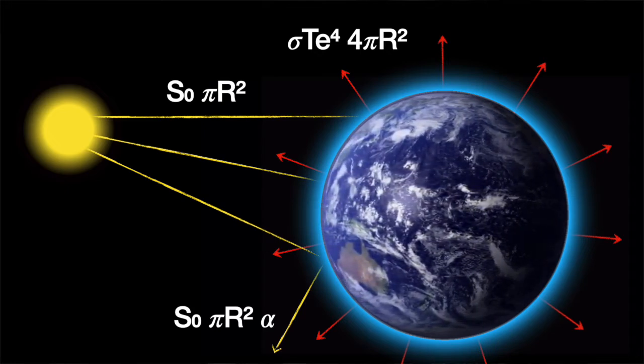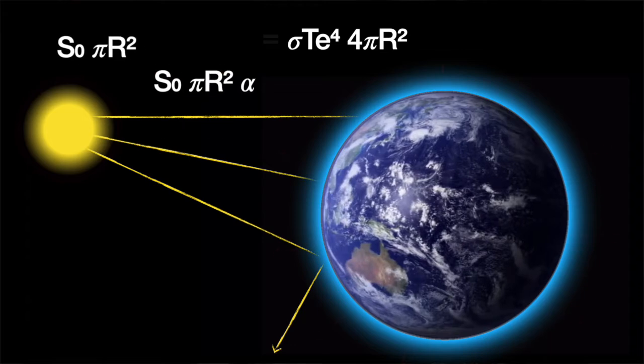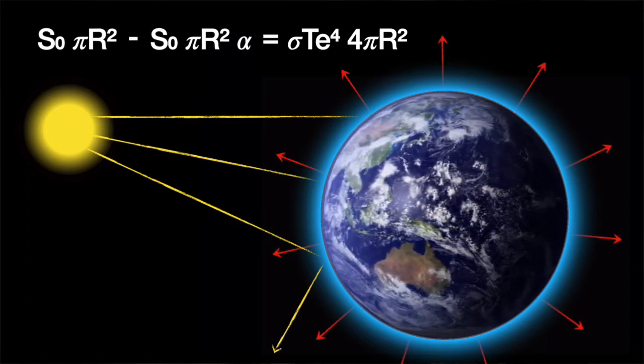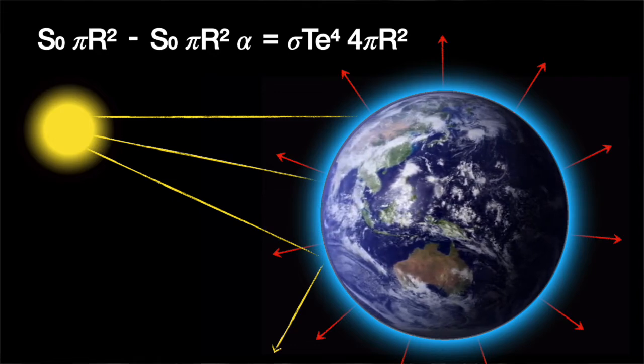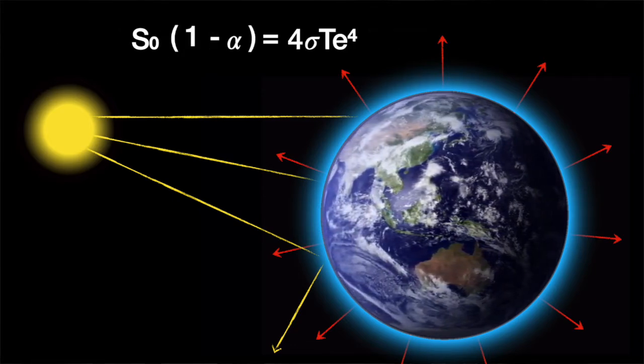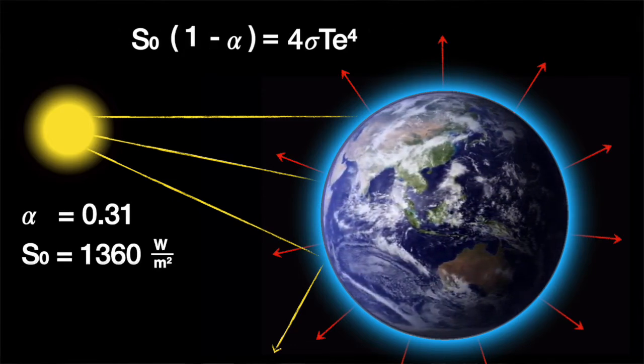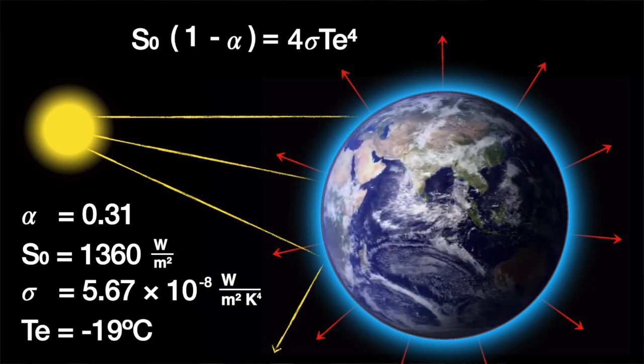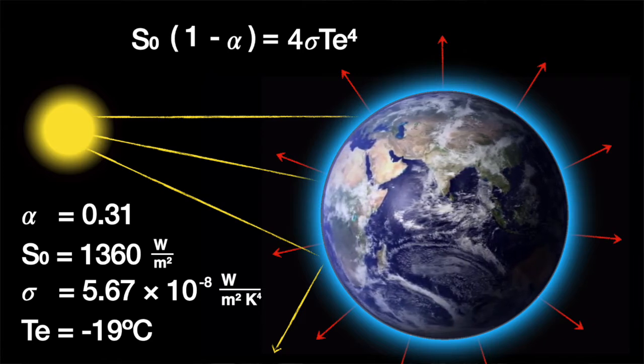So now we can build an equation because at equilibrium energy flows coming in are equal to those going out. And we can simplify it a bit and plug in the values to solve for temperature, and we find that the effective temperature of the Earth must be minus 19 degrees Celsius.